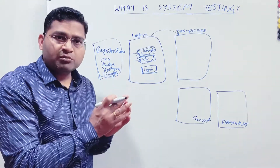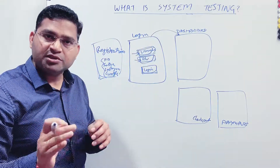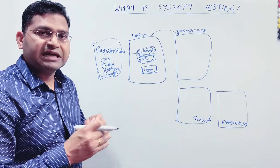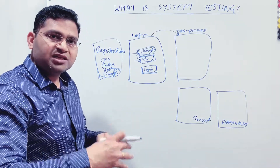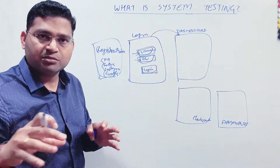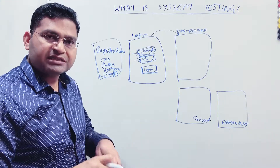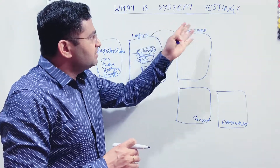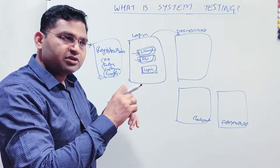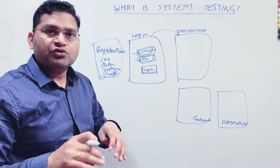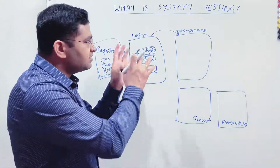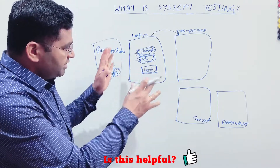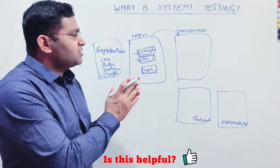Now, system testing can also include System Integration Testing, or SIT. For example, if your e-commerce application integrates with third-party or external systems, you also need to do system integration testing, because your e-commerce website needs to integrate with those external systems and that part must be covered in SIT as well. In the broader categorization, system testing is considered to cover both phases — ST and SIT are both considered as system testing as a whole.